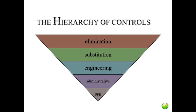Before we go, we need to cover a few things about the hierarchy of controls. Safety controls may be broken into five stages: elimination, substitution, engineering, administration, and personal protective equipment (PPE). The elimination stage is concerned with physically eliminating the hazard. Engineering controls isolate people from hazards, while substitution replaces hazards with a less hazardous process or substance.